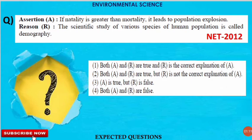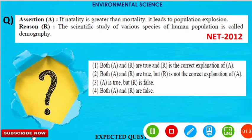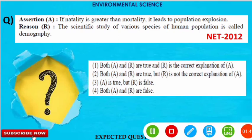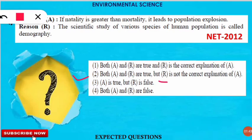The second question is an assertion and reasoning type. The assertion states: if natality is greater than mortality, it leads to population explosion. The reason given is: the scientific study of various species of human population is called demography. The correct option is number two — both statements are true, but the reasoning is not the correct explanation of the assertion.